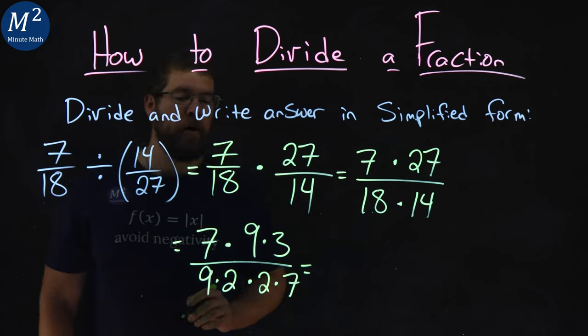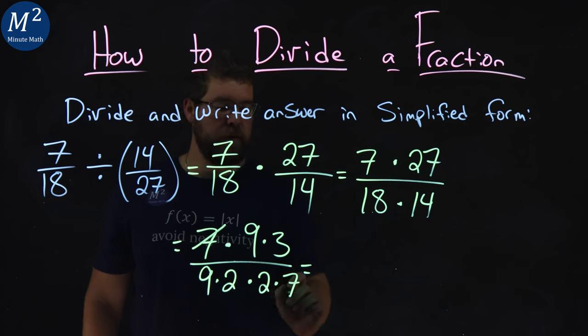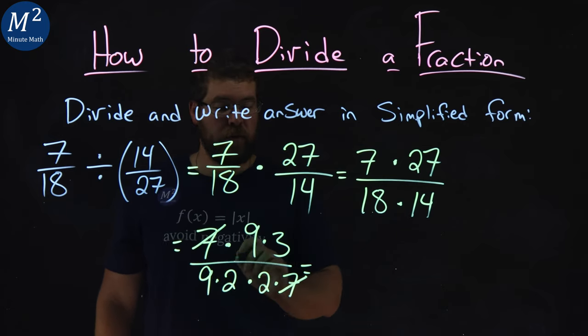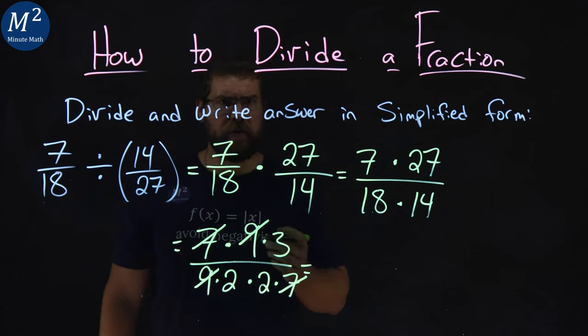Okay, we got a lot of stuff that we can cancel out here. The 7 is in the numerator and denominator. I can cancel it. Same thing with a 9. 9, 9, cancel. What's left?